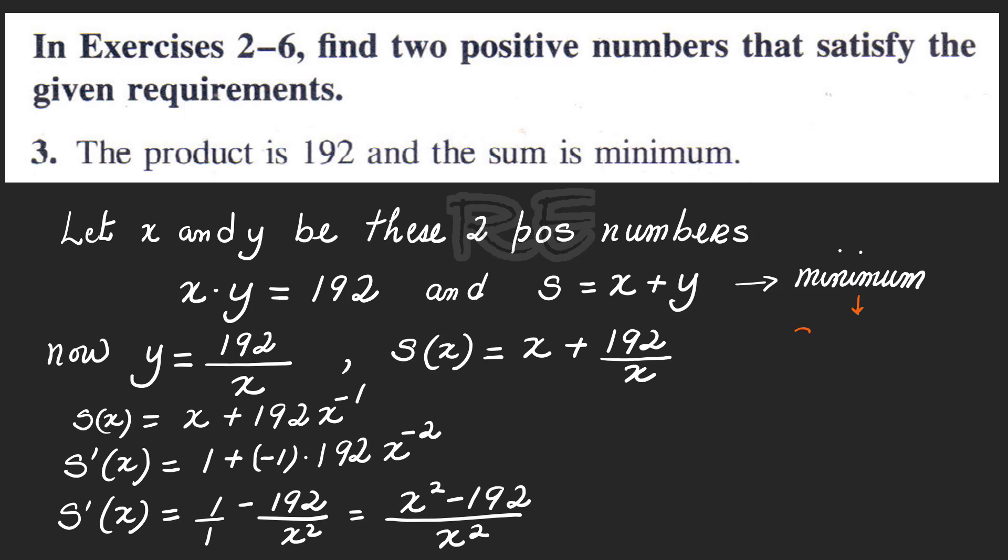Now, to get the minimum, we have to set the derivative equal to zero. Therefore, the numerator will be equal to zero, x squared minus 192. And x squared minus 192 is equal to zero. x is equal to plus or minus square root of 192.